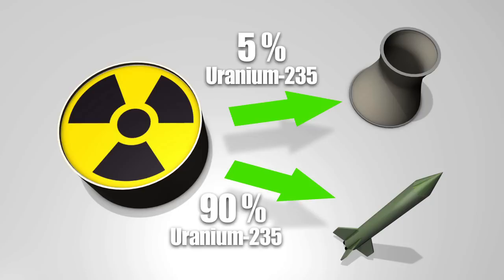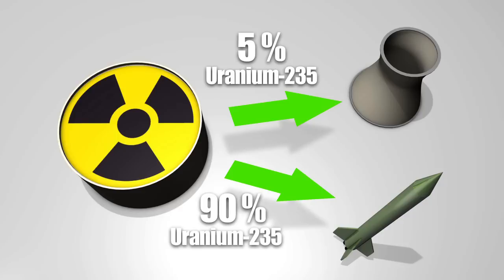To generate power, U-235 must be enriched to 5%. Uranium enriched to 90%, however, can be used to make a nuclear weapon.